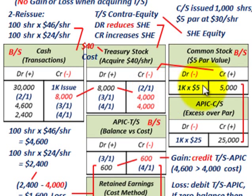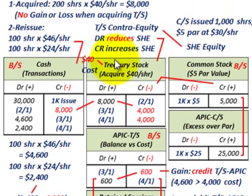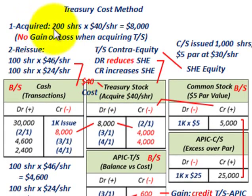When we're using the cost method, the common stock par value or any excess over par doesn't come into play. All we do with the cost method is deal with the cost for acquiring our shares. For example, say we acquired 200 shares at $40 per share — that would be $8,000 spent.